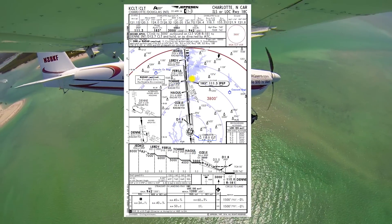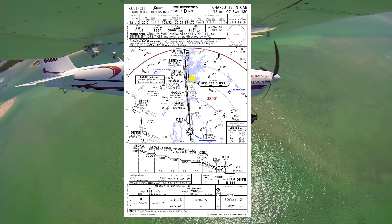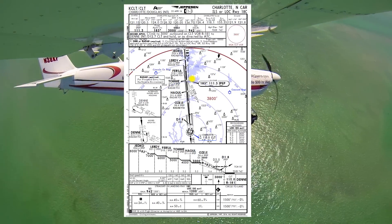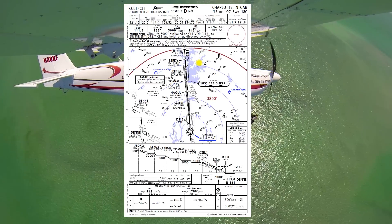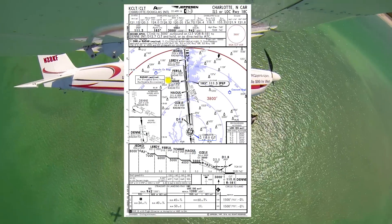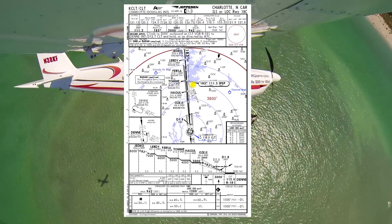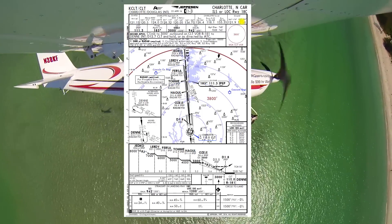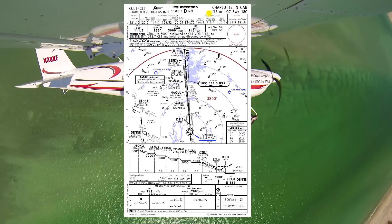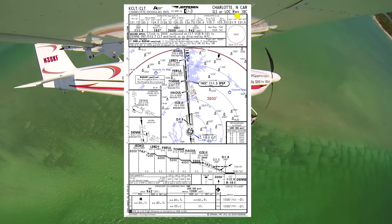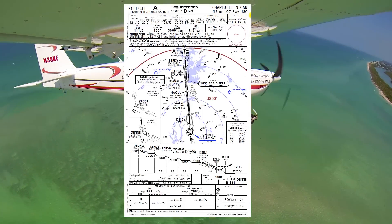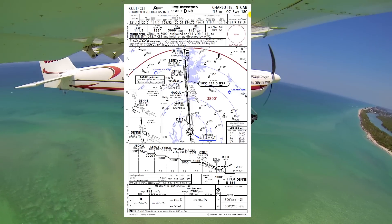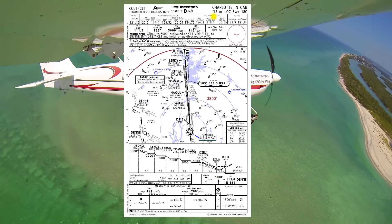So to brief up a Jeppesen plate, it's a lot easier than briefing an FAA plate just because the way things flow really nicely on a Jeppesen plate. So we've got Charlotte, North Carolina, ILS or Localizer, Runway 18 Center. That's the first thing we want to say.